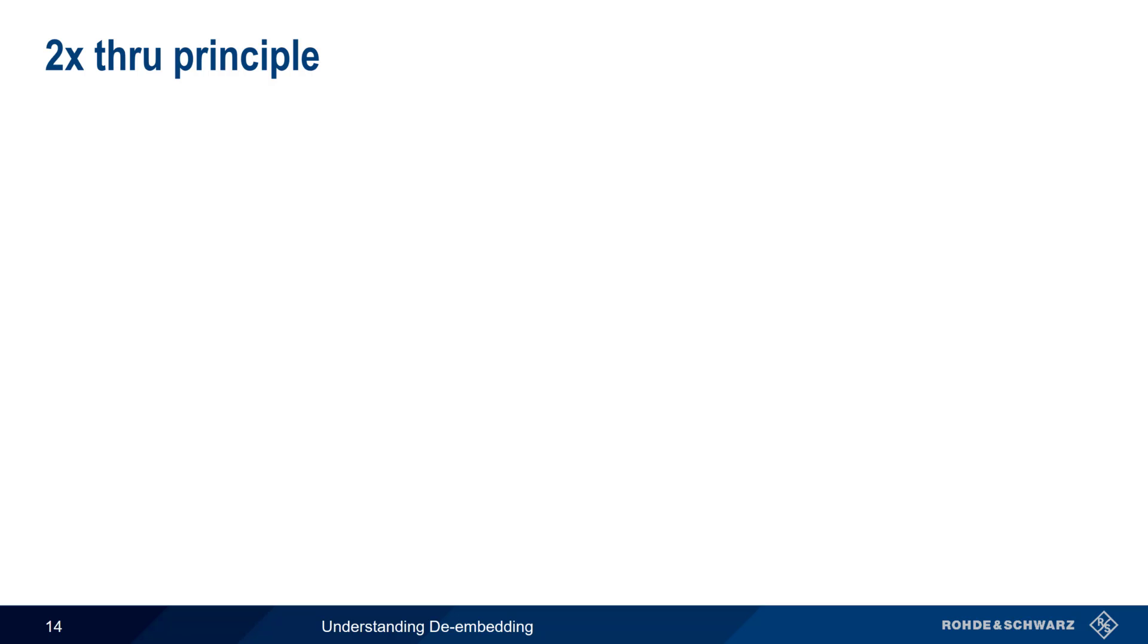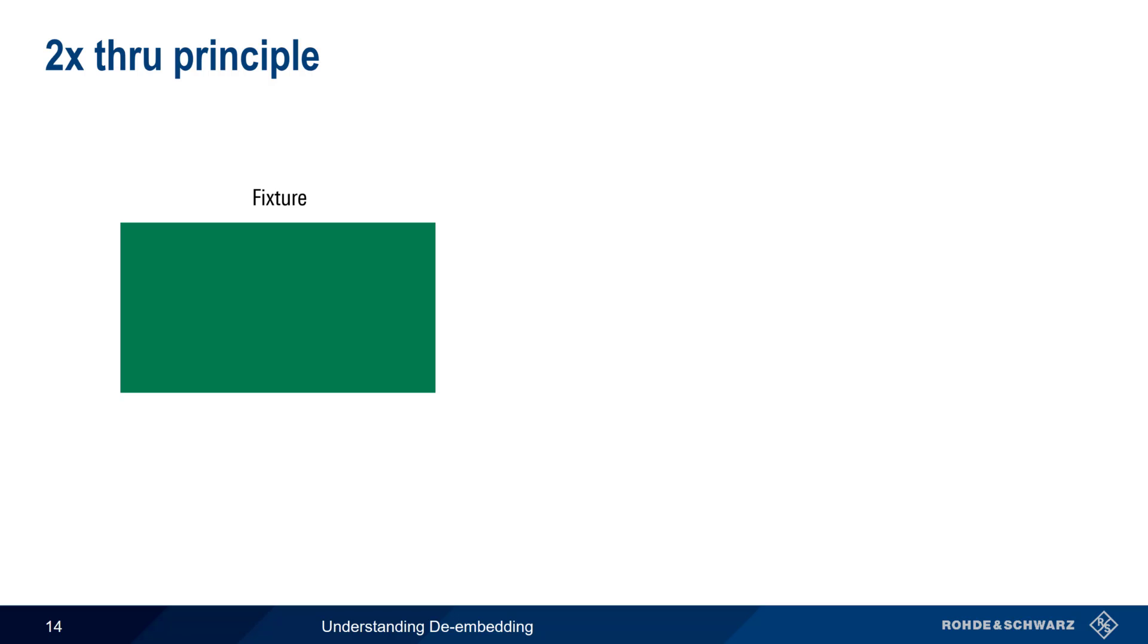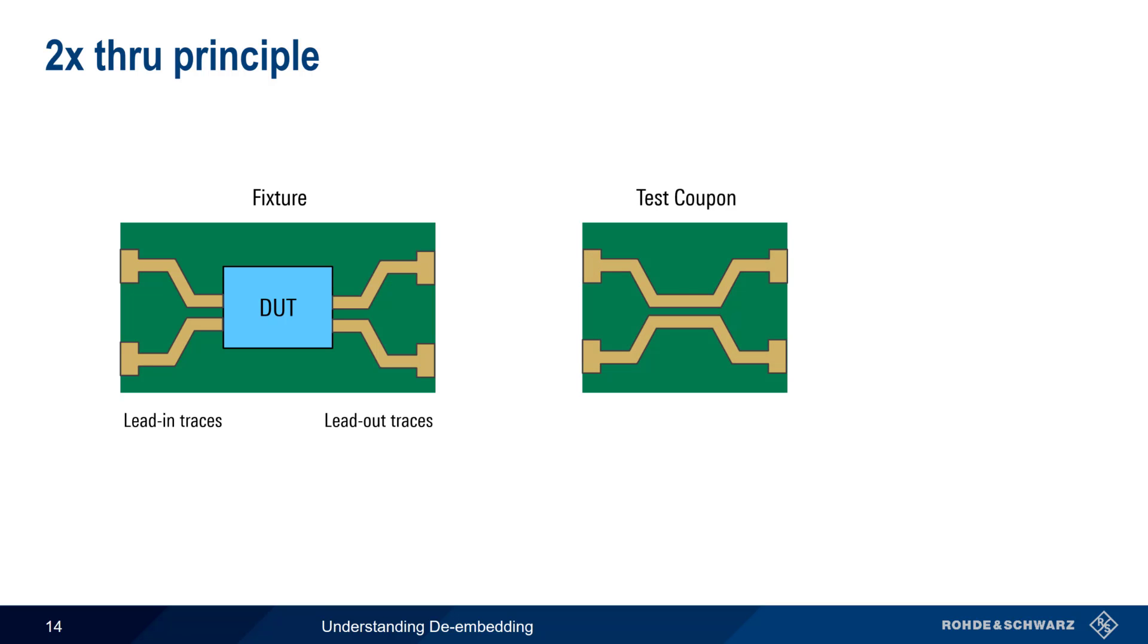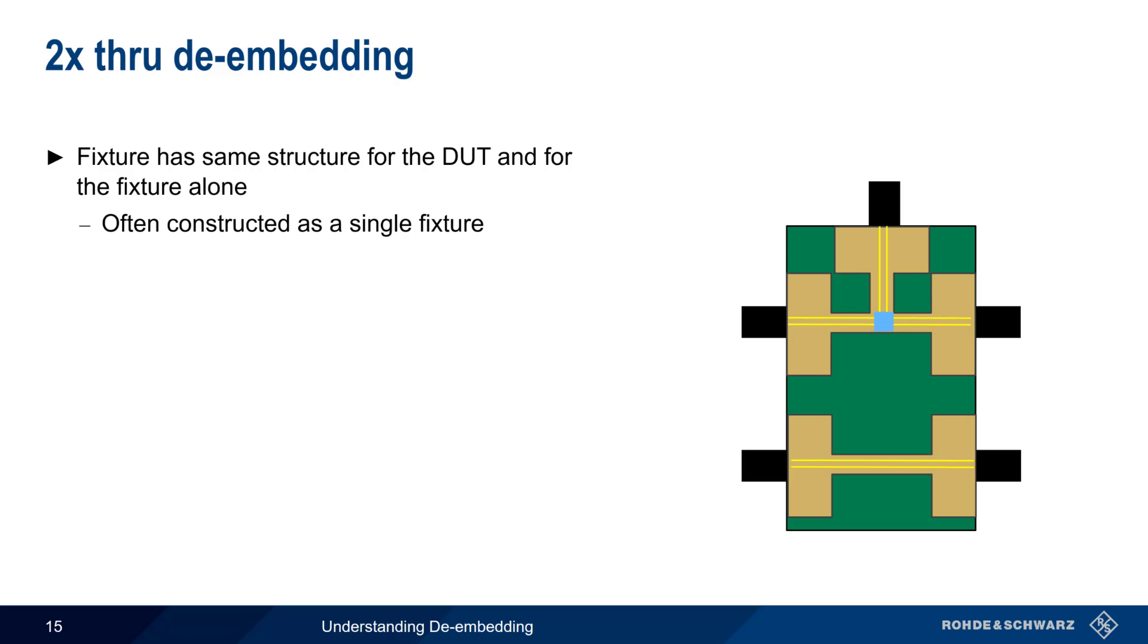One newer approach to de-embedding involves something called a 2x through. Conceptually, we start with a fixture containing a device under test, with both lead in and lead out traces. If we were to construct a single test coupon that is similar to the fixture plus the DUT in composition and dimensions, we could then subtract this coupon and be left with a DUT alone. In 2x through de-embedding, we use a fixture that has the same structure for the DUT and for the fixture alone. These are often constructed together as a single fixture, containing both a DUT and a 2x through.